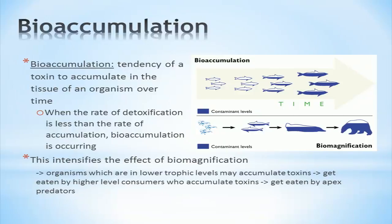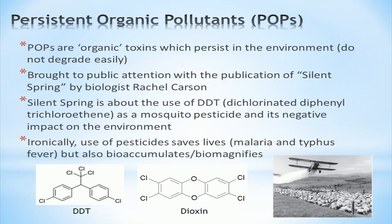The graphic on the right-hand side helps to visualize the differences between bioaccumulation and biomagnification and the relative concentration of toxins within and between each trophic level. There are many classes of toxins which have a potential to biomagnify and bioaccumulate, but persistent organic pollutants (POPs) are probably the most ominous. POPs are organic toxins which do not easily degrade in the environment.